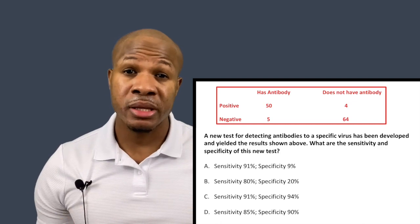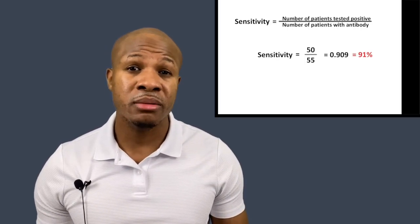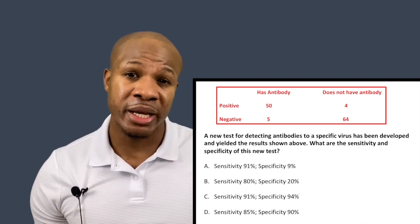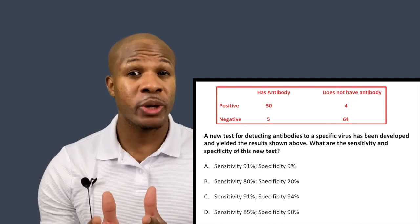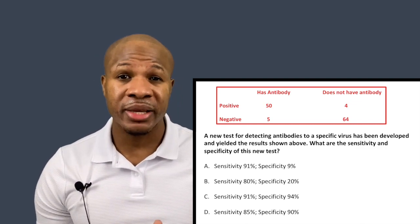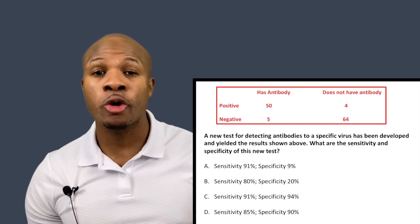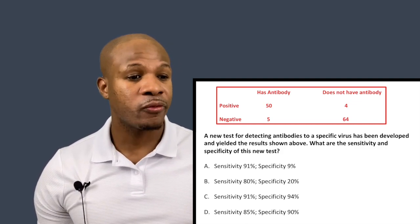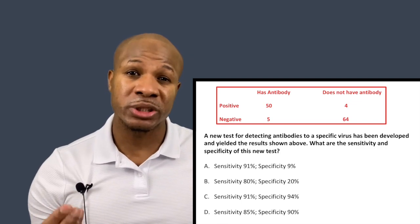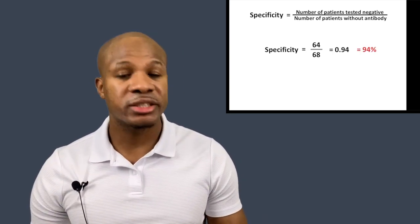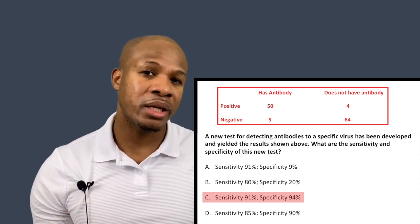50 out of 55 is 0.909, which is approximately 91%. So the sensitivity of this test is 91%, meaning answer choice A or C would be correct. Now we just have to calculate the specificity. For patients who did not have the antibody, how good was this test at telling them they didn't have it? The total number of patients who did not have the antibody is 68 — that's 64 plus 4. The test got it right for 64 of those 68 patients. So 64 divided by 68 is 0.94, which is 94%. The answer is C: 91% sensitivity and 94% specificity. You just have to remember the concepts for sensitivity and specificity.